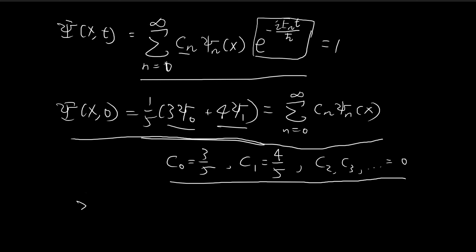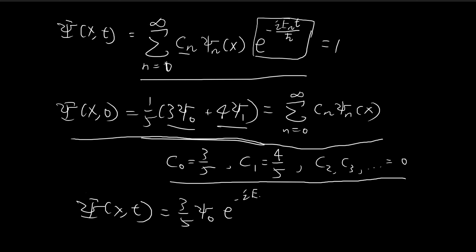So we know that c0 is equal to 3 over 5, c1 is equal to 4 over 5, and all the subsequent c's are equal to 0. So we can write out the wave function as 3 over 5 times xi 0 times e to the power of negative i E0 t over h-bar, plus 4 over 5 times xi 1 times e to the power of negative i E1 t over h-bar.